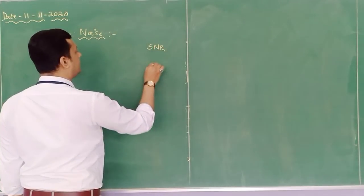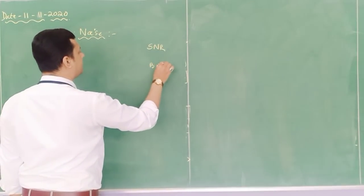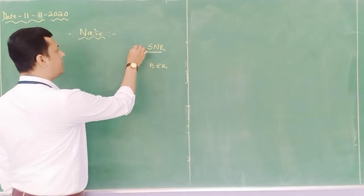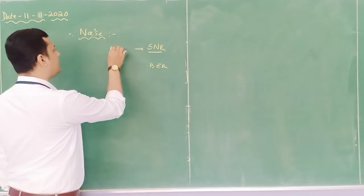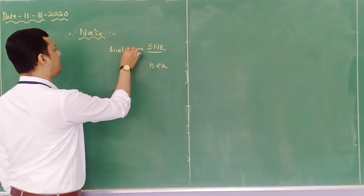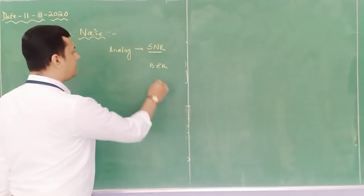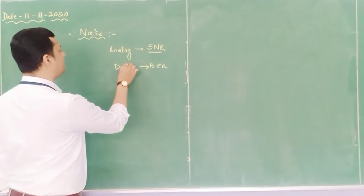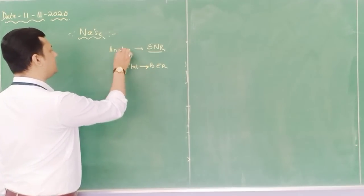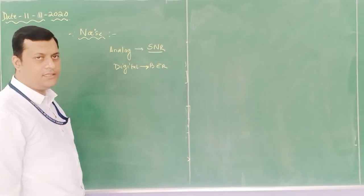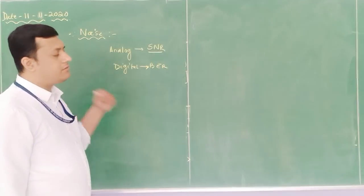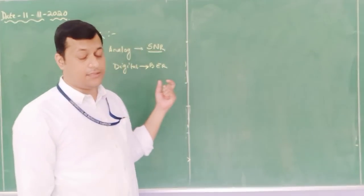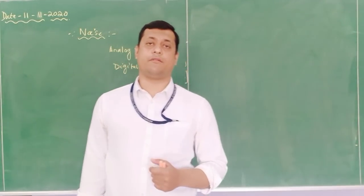SNR, signal-to-noise ratio, is used when measuring with respect to an analog signal or analog system. BER, bit error rate, is used when measuring with respect to a digital communication system. As I discussed in the last class, there are different types of noise: one is internal noise and one is external noise.